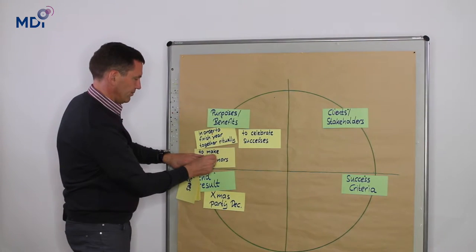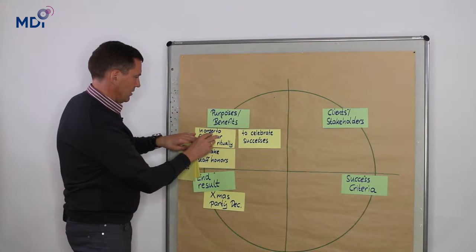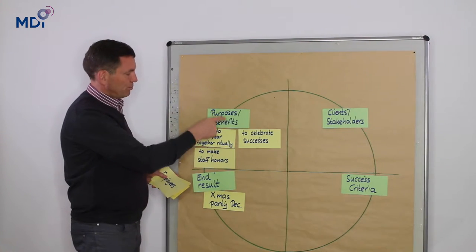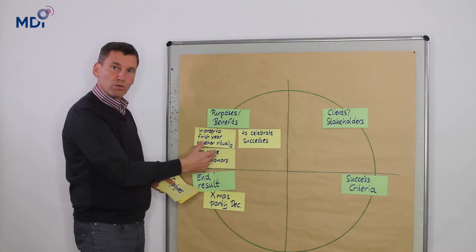So you see here, all the formulations about the purposes start with 'in order to,' because with 'in order to' we are always at the benefit or the purpose.